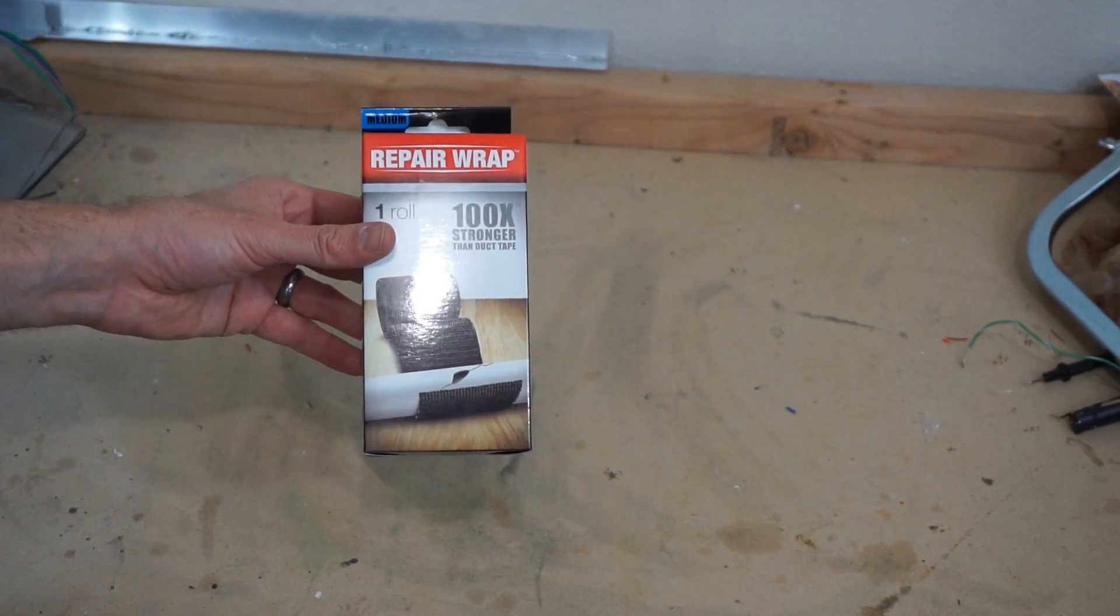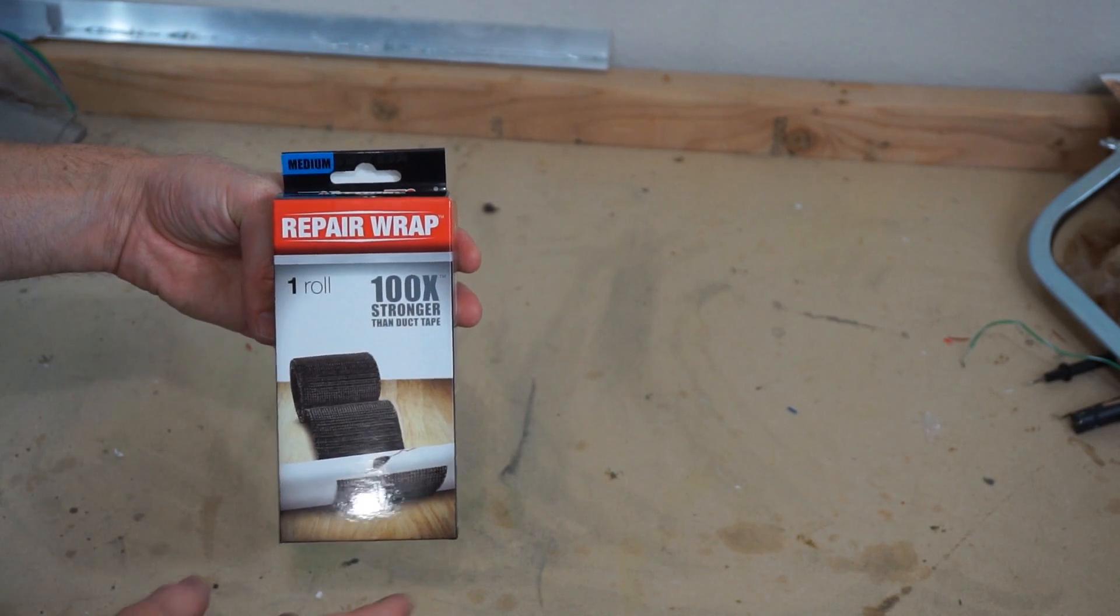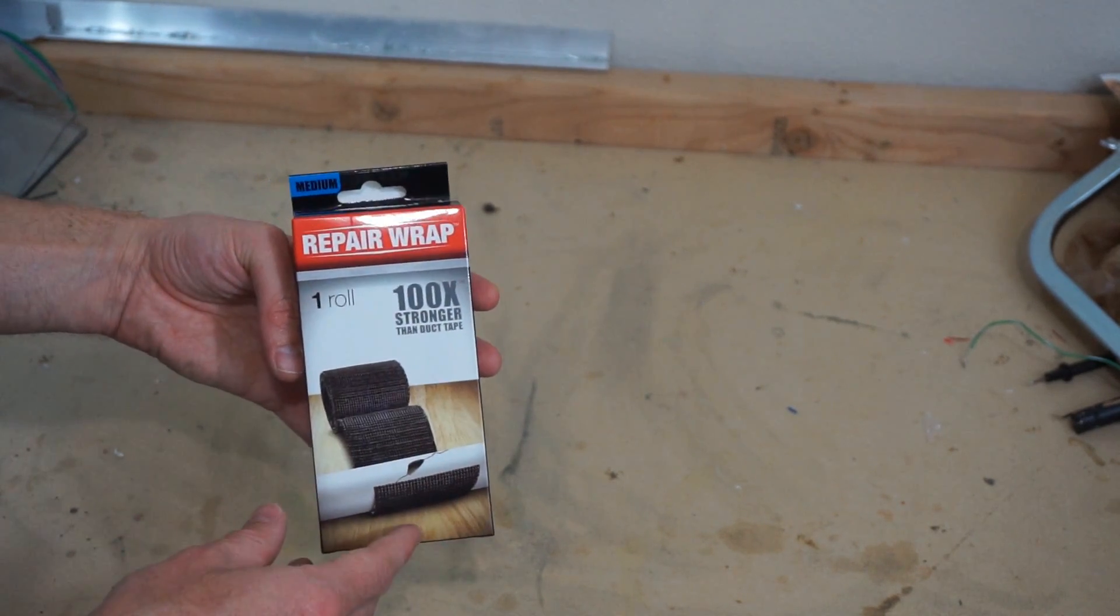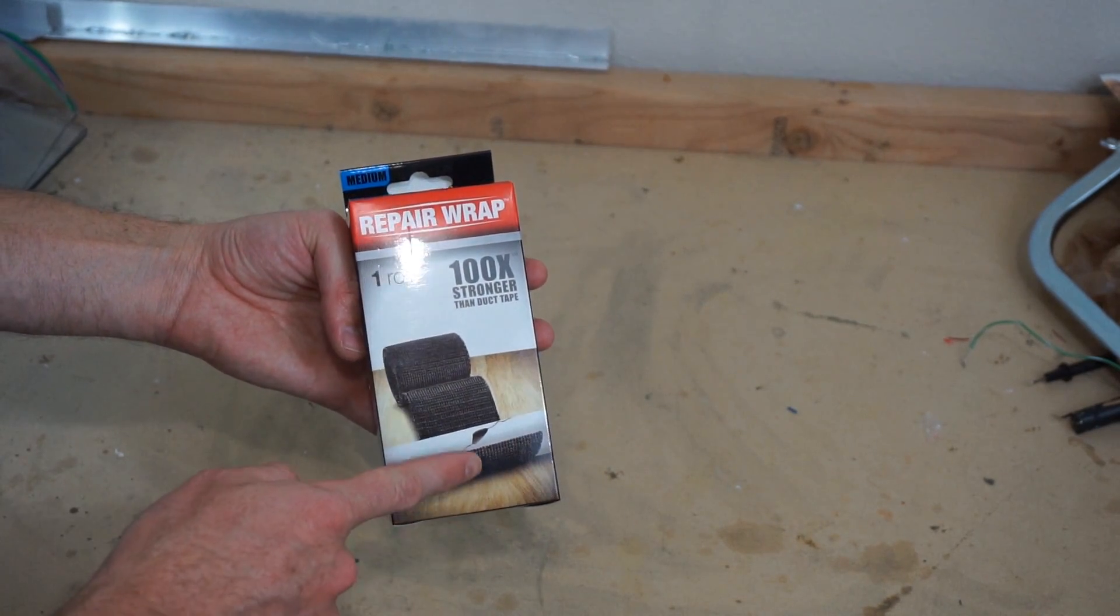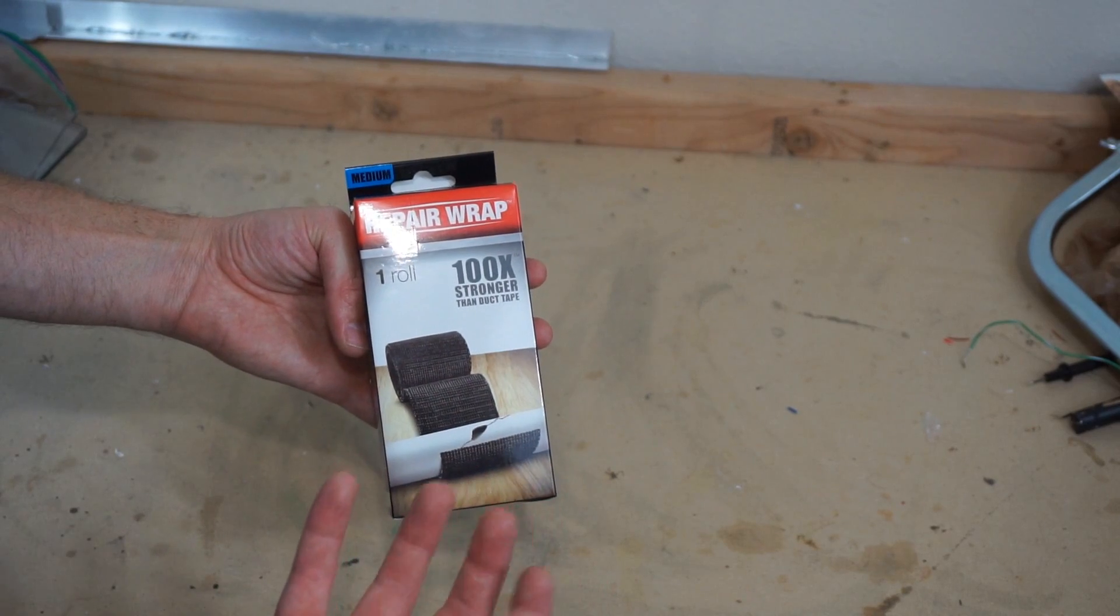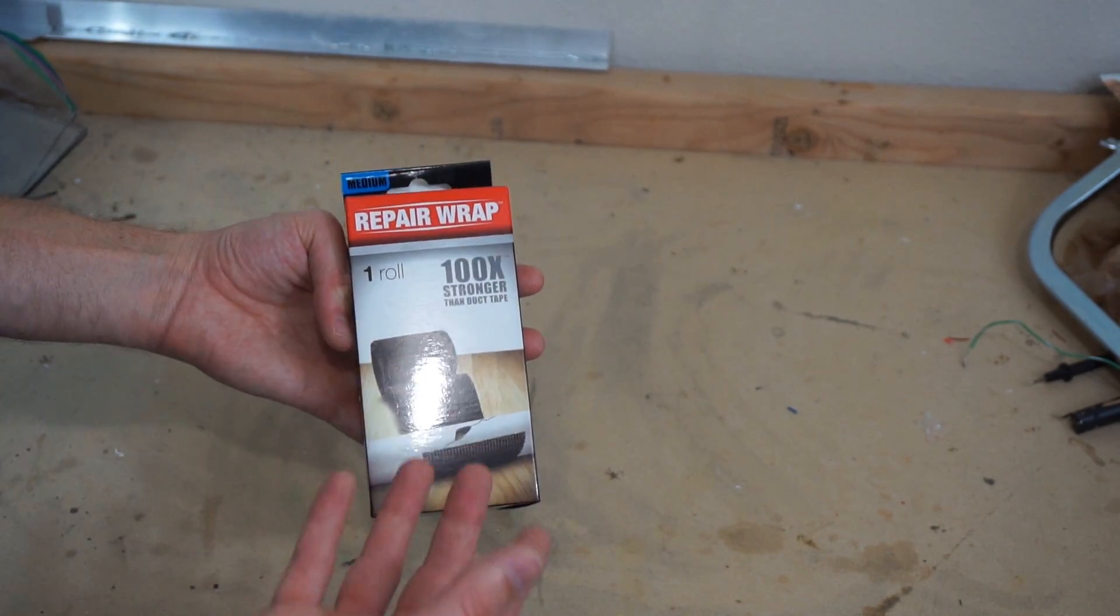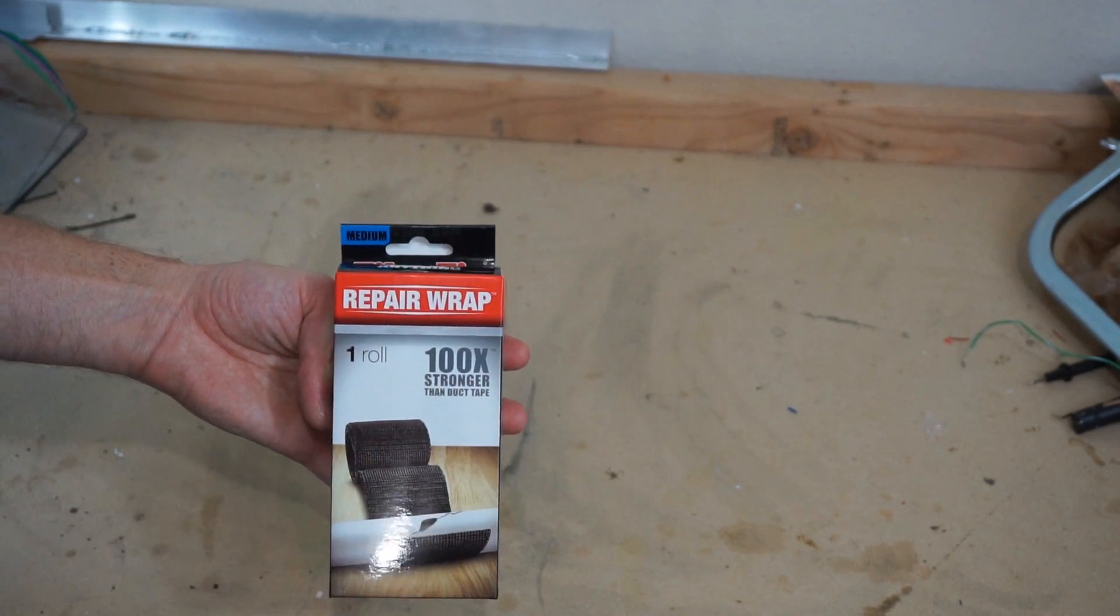Okay guys, today I'm going to be crushing FiberFix. If you haven't heard of this stuff, it's pretty cool. It's kind of a fiberglass composite material, the same stuff that casts are made out of, but you can use it to wrap around broken pipes, broken rods, or something. It's supposed to be very strong. On the package here it says 100 times stronger than duct tape.